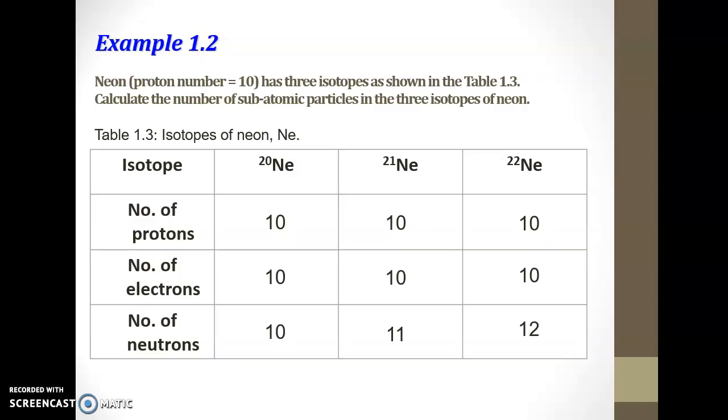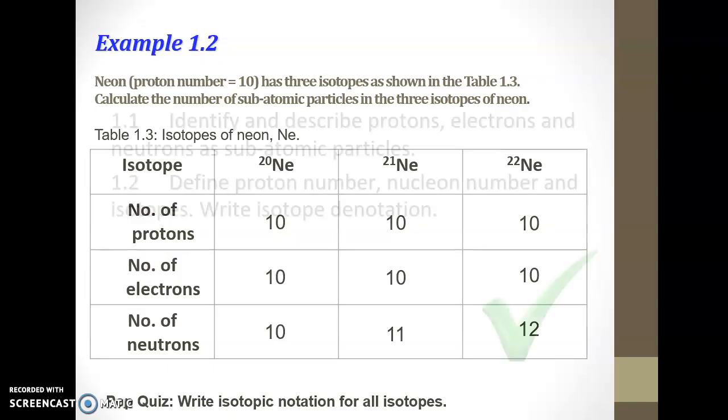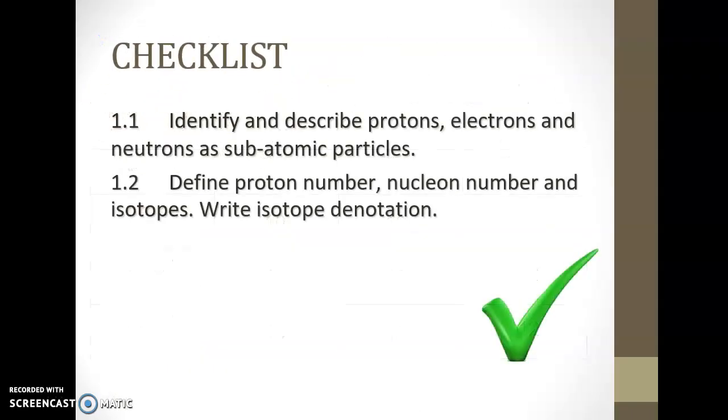Let's do another question. You can write this on your pop quiz page. Write isotopic notation for all isotopes for neon, of course. So, you can write it down. 20, 10, neon. Like that. As shown in the slide. So, there you go. We have learned all the things that we should learn for the first lesson of the first lecture today. Thank you very much for listening. And stay tuned for the next lesson. Assalamualaikum. Bye.